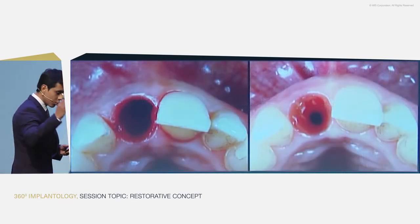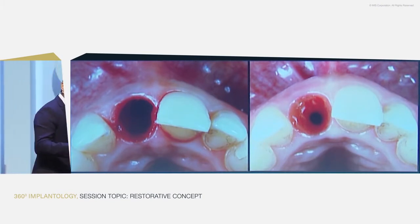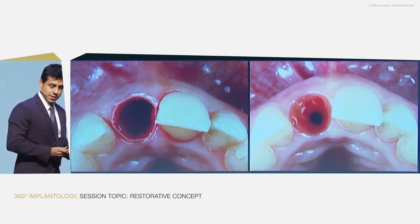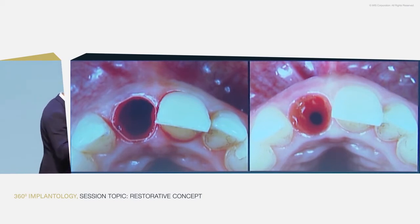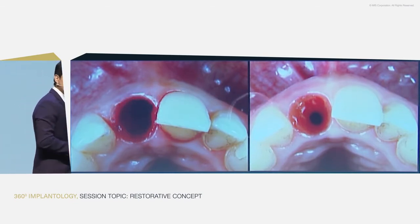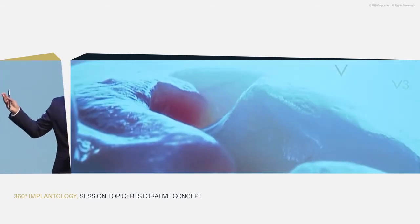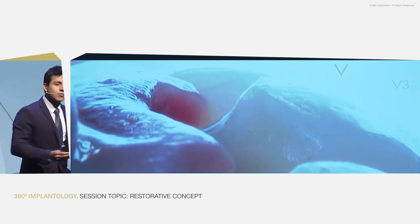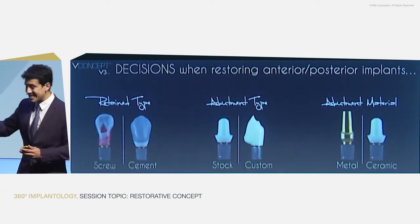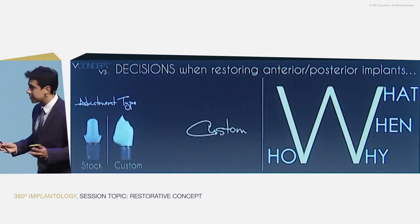Before you choose the type of restoration, we have to create acceptable tissues around your implant restorations. To provide this kind of tissue, we have to manage the tissue in the appropriate way, which means we have to take care of our provisional restorations — and sometimes customize them since the provisional phase.